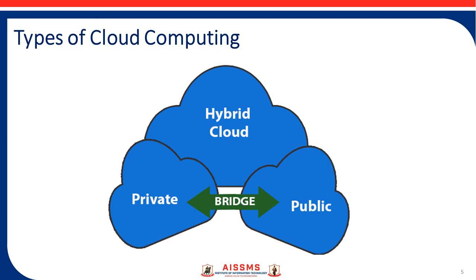Now the types of cloud computing: first is public, second is private, and third is hybrid cloud. What is meant by the public cloud? The cloud resources that are owned and operated by a third-party cloud service provider are termed as a public cloud. It delivers computing resources such as servers, software, and storage over the internet. The second one is the private cloud — cloud computing resources that are exclusively used inside a single business or organization are termed as a private cloud.